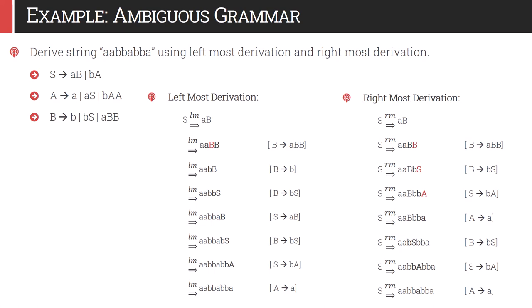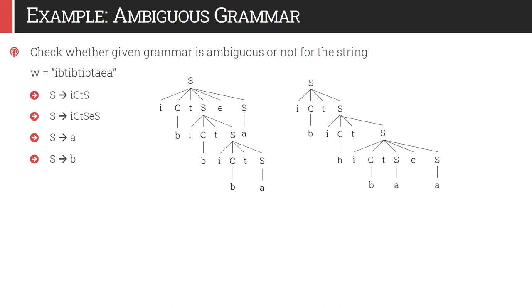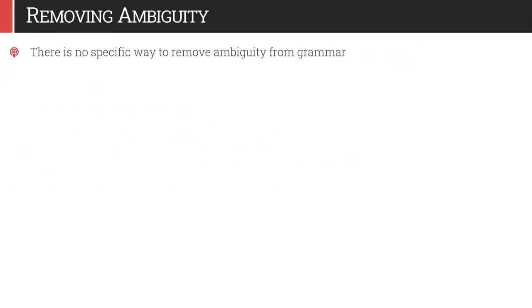For the same string we can have both a leftmost derivation and rightmost derivation, corresponding to two different parse trees. Consider one more example: check whether the given grammar is ambiguous or not for the string W equal to iBtiBtiBtbtaea. The grammar S gives iCtS and so on with four productions — this is the grammar for if-then and if-then-else conditions. As we have two possible parse trees for the given string, this grammar is ambiguous.